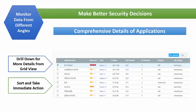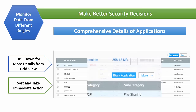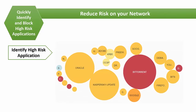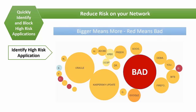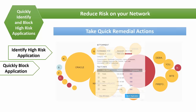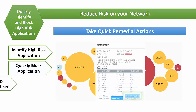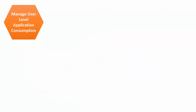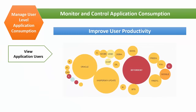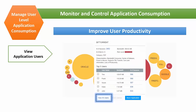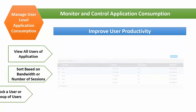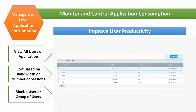In addition to deep visualization, Security Director's unique actionable intelligence design allows you to take immediate remedial actions. Taking action is easy and quick — simply bigger means more, and red means high-risk and bad. Quickly decide to block a high-risk application or a set of risky applications for users with a single click. Mouse over an application to view the list of all users using the application, simply monitor the detailed activity of the application, and sort and select users based on bandwidth or number of sessions to quickly block the application.